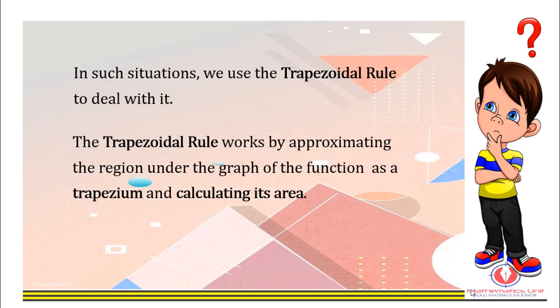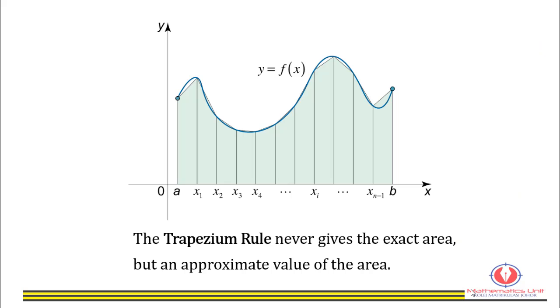In such situations, we use the trapezoidal rule to deal with it. The trapezoidal rule works by approximating the region under the graph of the function as a trapezium and calculating its area. The trapezium rule never gives the exact area, but an approximate value of the area.